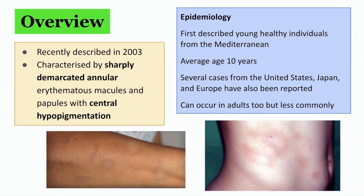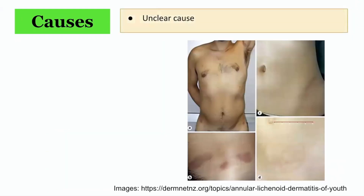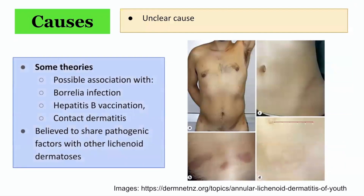Several cases from the United States, Japan, and Europe have also been reported. It can occur in adults, but less commonly. The cause of Annular Lichenoid Dermatitis of Youth is unclear. Some theories include a possible association with Borrelia infection, Hepatitis B vaccination, and contact dermatitis.